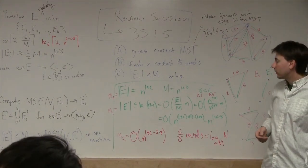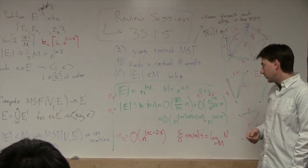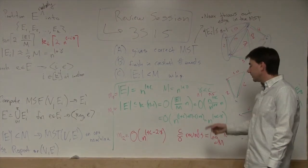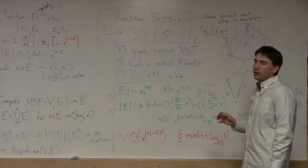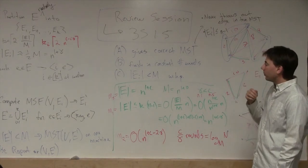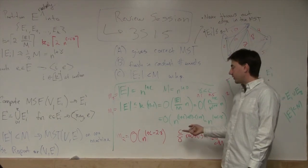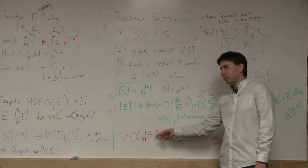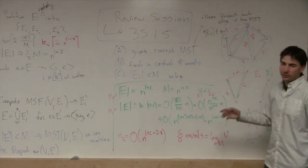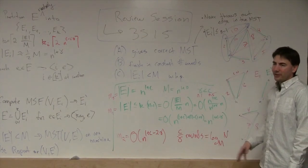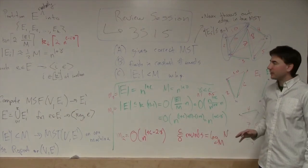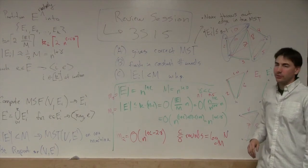Shouldn't there be C over gamma plus 1? You only need to get down to a set of size N to the 1 plus gamma, so you don't need to divide that many times, but that takes an extra round. I might be off by one round here. You may also need a round to count the number of edges.